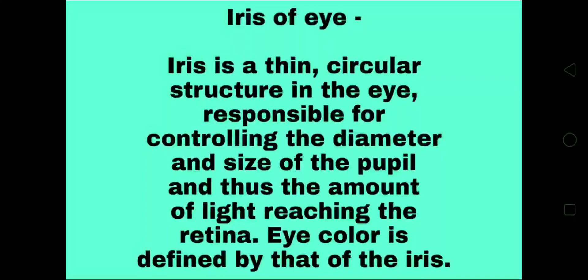The iris of the eye is a thin, circular structure responsible for controlling the diameter and size of the pupil, and thus the amount of light reaching the retina. Eye color is defined by that of the iris.